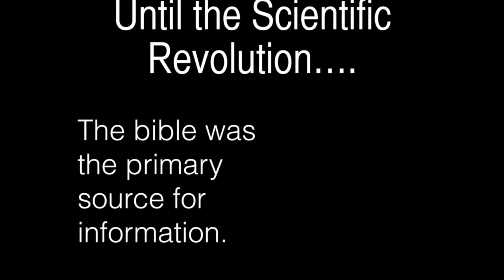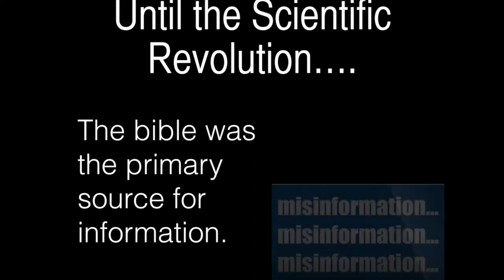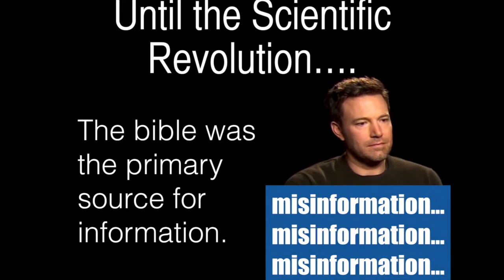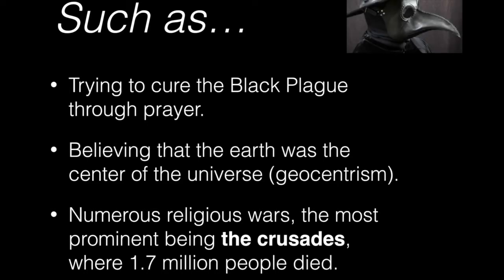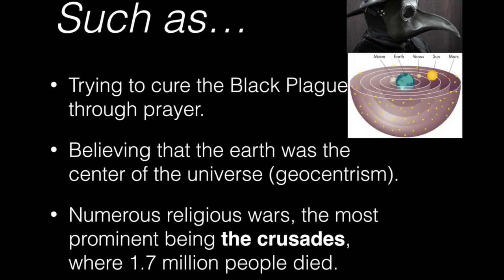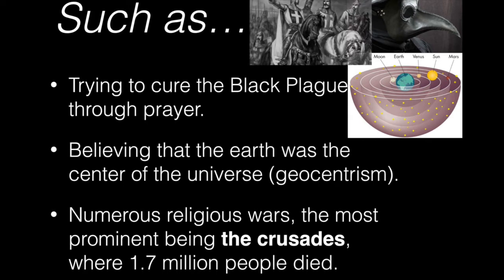Prior to the Scientific Revolution, the main source of information came from the Bible, which was not a great place to look for scientific information — it was full of misinformation. For example, trying to cure the plague with prayer, which as we know does not work. Another example is the idea that the earth is the center of our solar system and all other planets revolve around us — the concept of geocentrism, which the church preached but is simply incorrect. Finally, the church advocated for numerous religious wars in which over a million people died.